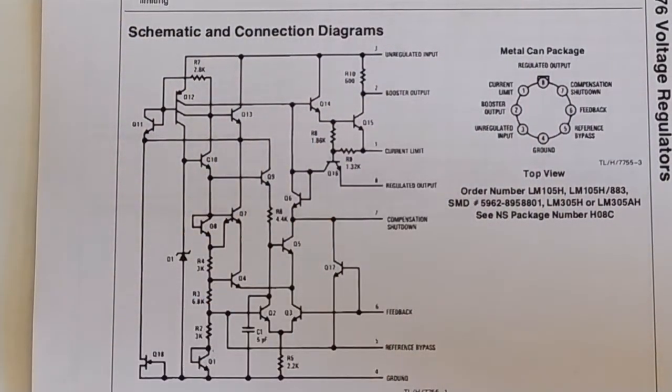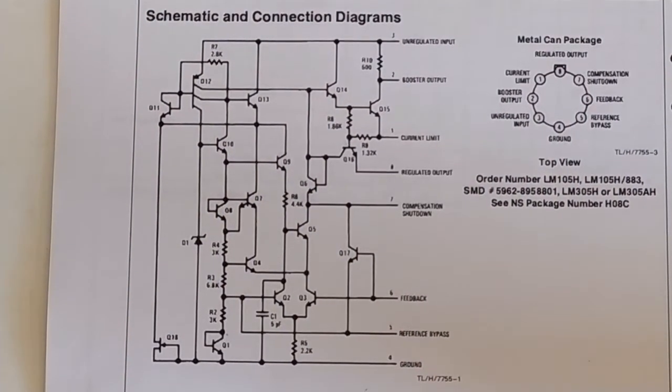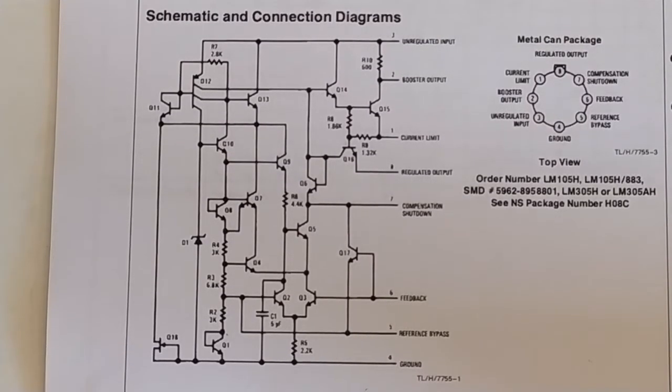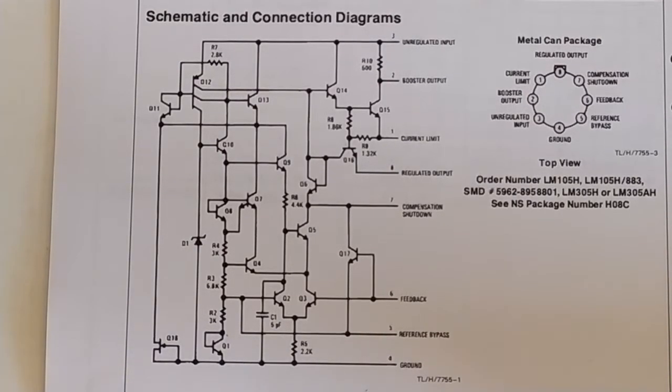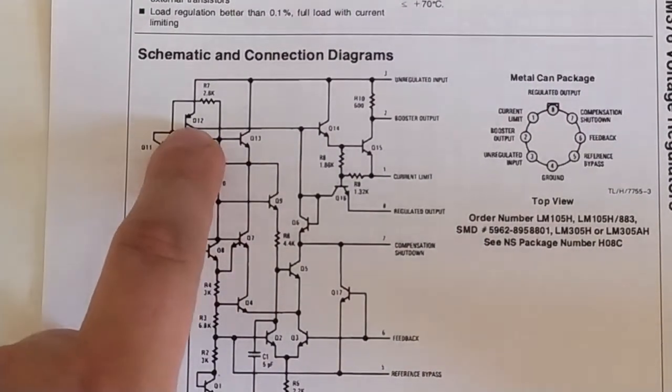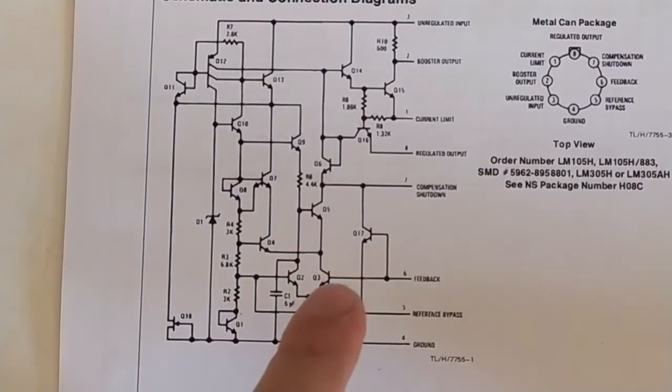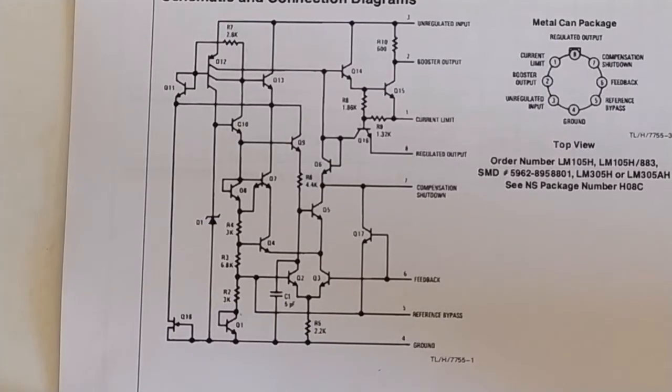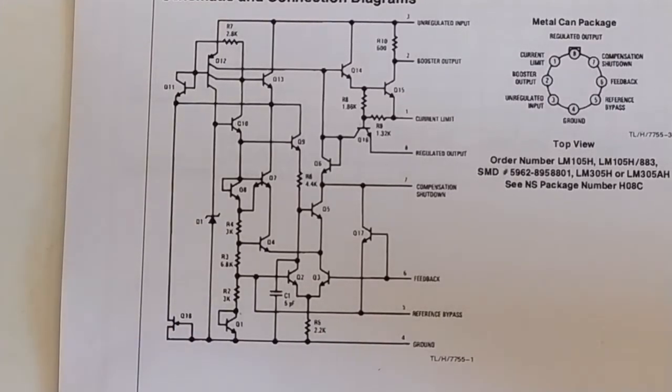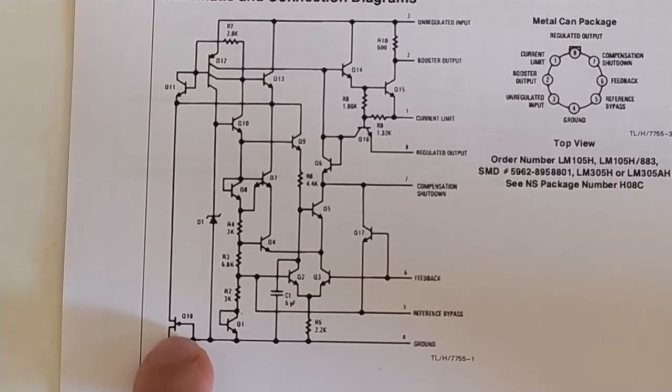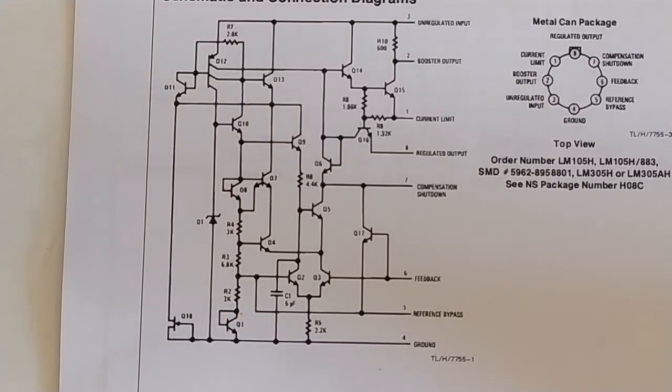They're relatively complex actually if you look at the internal circuitry compared to what we looked at before in the early integrated circuit series. This has quite a lot of transistors in it and some funky stuff too. Then there's also this bit here and it is just a FET which I think they're using as a current source if I'm correct here, which would make sense.